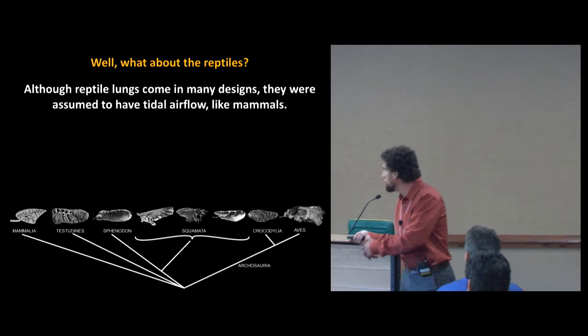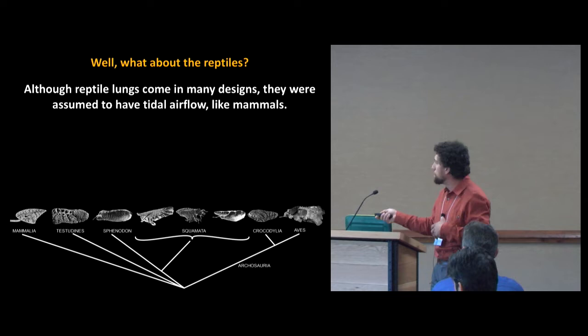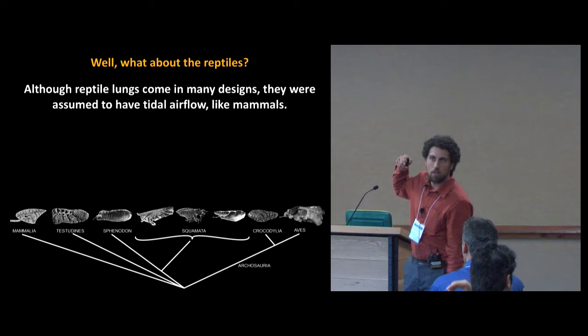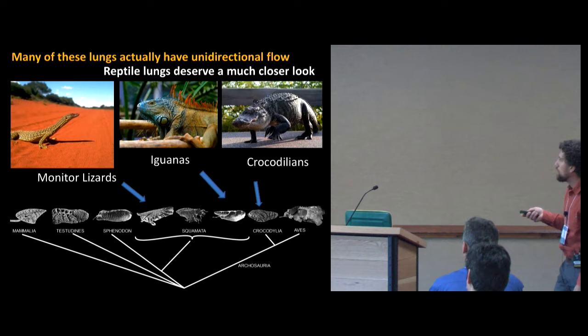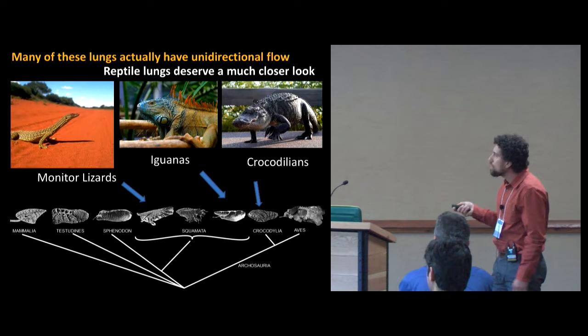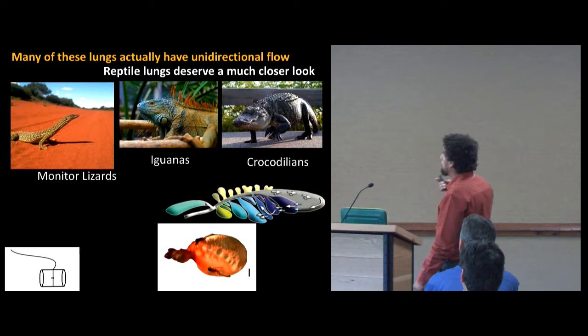Air comes down the trachea in a bird and bypasses openings to the lung, goes back into the caudal opening, and fills up the caudal sacs with fresh air. At that same time, the anterior air sacs were expanding and drawing the stale air from the lung into them. When the animal breathes out, those sacs compress, and the air from the caudal sacs goes through the lung. So at some point there was a common ancestor of these two lung designs. What about the reptiles that we see today? Reptile lungs come in many different designs, but they were always assumed to have tidal air flow like mammals. However, we've discovered that many of these lungs actually have unidirectional flow like birds.